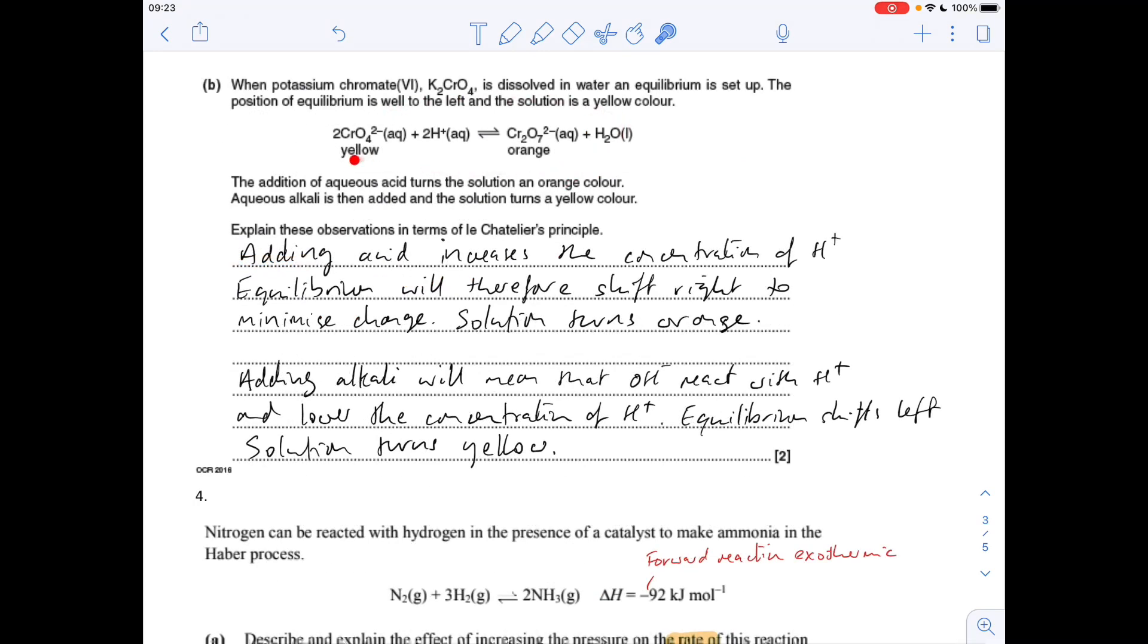The next question, a different equilibrium, but again we've got colours. We've got to explain the change in colour. We're told that the addition of aqueous acid turns the solution an orange colour. Addition of acid: acids contain or donate H+ ions, so that concentration is going to increase. The equilibrium deals with that by making more of the forward reaction happen, because the CrO4 2- ion is going to react with the extra H+ ions and send the equilibrium more to the right hand side. So it's going to look darker, more orange.